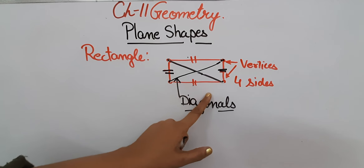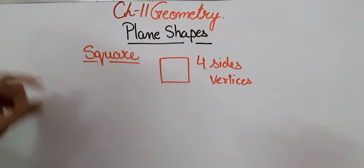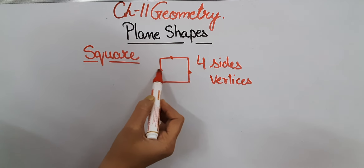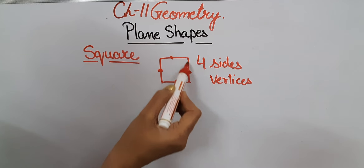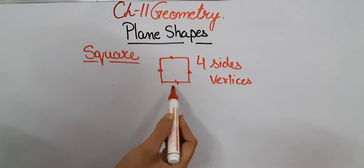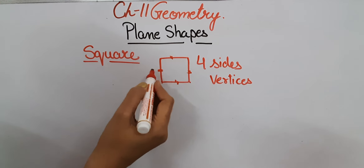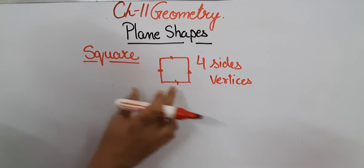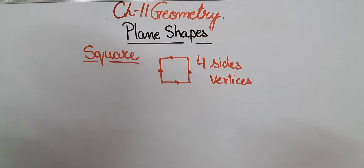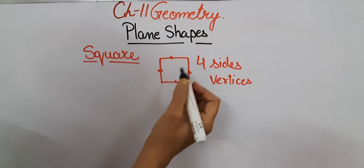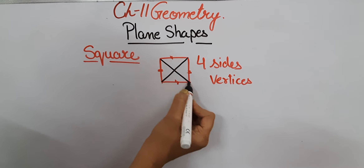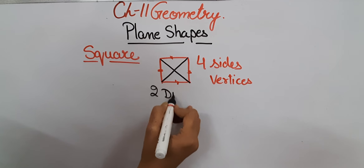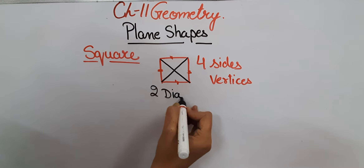Now let's see the square shape. A square also has four sides and four vertices. If you measure all the sides of the square, you will find that all the sides of the square are equal in measurement. So the square has all equal sides. A square also has two diagonals, and both diagonals will be the same in length if you measure them.